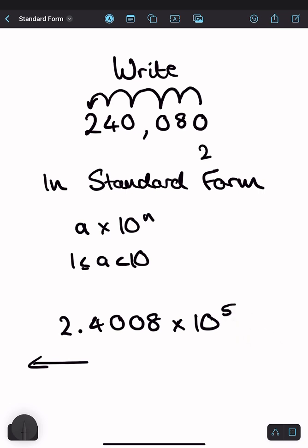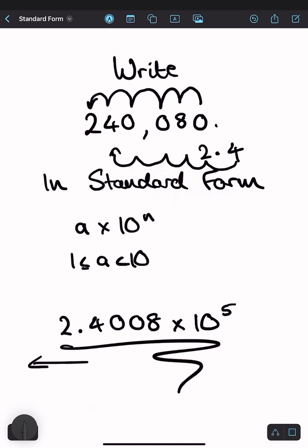And I can check, the decimal point would be here, and the 4 is now here. If I move it up 5 places, I go 1, 2, 3, 4, 5, and the 4 is also back to where it originally was. So this is my answer in standard form.